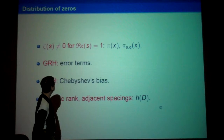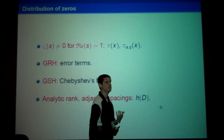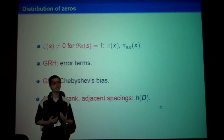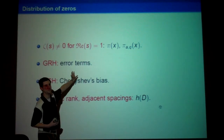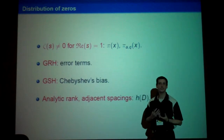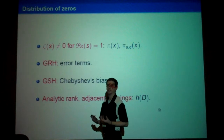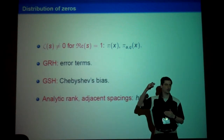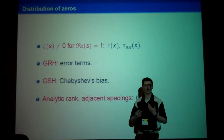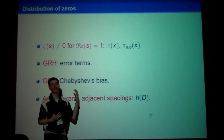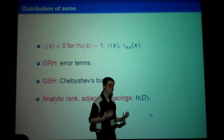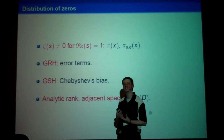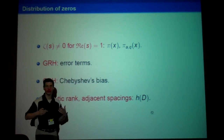There are many problems in number theory where the answers, or at least the ways we have of solving them, are related to information about the zeros. If you want to establish the infinitude of primes or primes in arithmetic progressions, this comes down to understanding what's going on at the very edge of the critical strip — that there are no zeros of the L-functions where the real part of s equals 1. For more refined things like the error term, you need more about the distribution of zeros; this is where GRH comes in. For even more refined results like Chebyshev's bias, you need the Grand Simplicity Hypothesis, which says the ordinates of the zeros are linearly independent over Q.